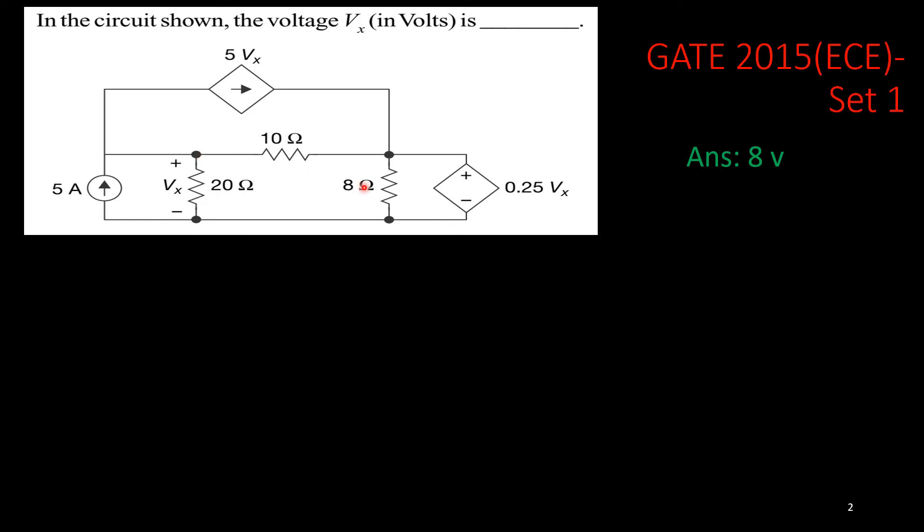This 8 ohm resistance we will remove first, it is not useful. And here you will see, these are the same node, that's the important thing, this node and this node actually they are same, because there is no element here. Don't be confused.